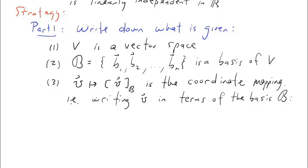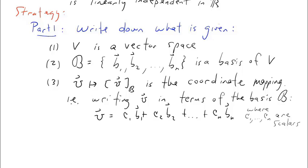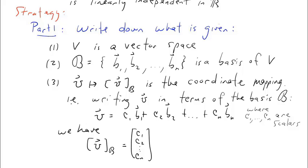To be explicit, if we write v in terms of the basis b, v is going to be a linear combination of b1 down to b sub n, where these c's are scalars. With this notation, the coordinate vector of v relative to b is simply the vector composed of the scalars c arranged into a vector in Rn.